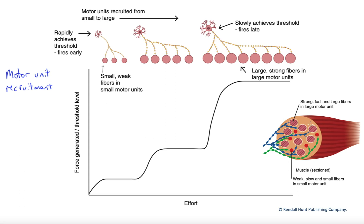Let's look at our whole muscle down here at the bottom — a very simplified version, but we've got it transected here. We can see our alpha motor neurons coming in, axons coming in from the spinal cord and innervating groups of muscle fibers. In cross-section, these circles represent those cut muscle fibers. The muscle fibers actually fall into multiple groups, which we'll learn more about in Chapter 7, and those groups are characterized based upon their functional abilities.